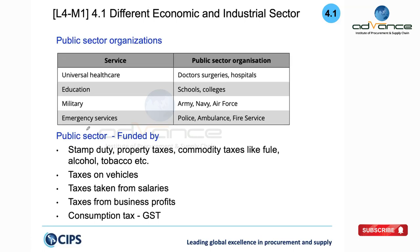Different kinds of public sector include hospitals, schools, military defense, civil defense, internal defense, and emergency services, among many more. These are generally funded by taxes — direct tax, indirect tax, income tax, GST, stamp duties, commodity taxes, fines, alcohol tax, tobacco tax, vehicle tax, income tax from salaries, corporate tax on business profit, and consumption tax like GST. These are some of the ways money is collected to fund the public good.